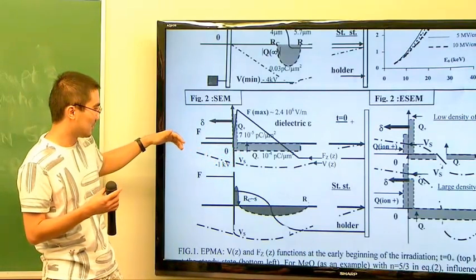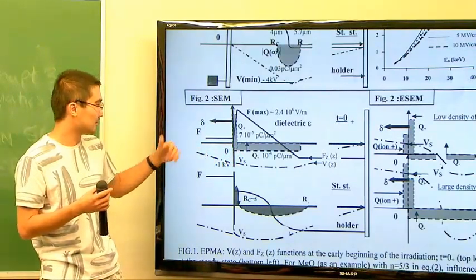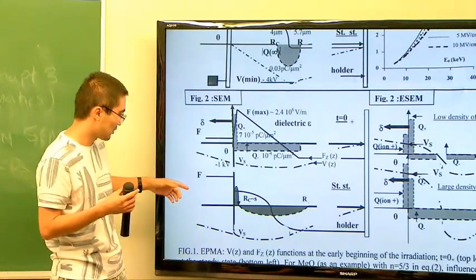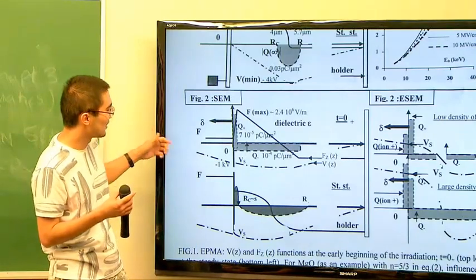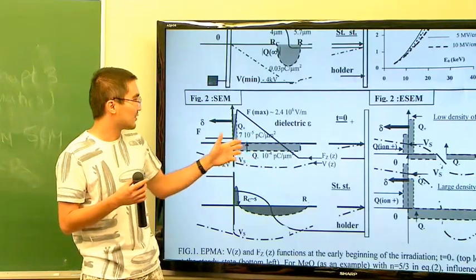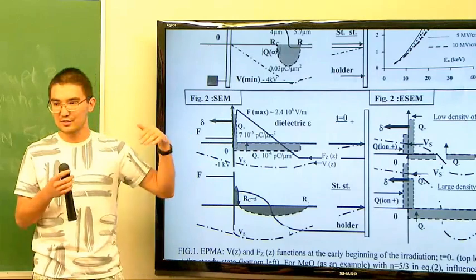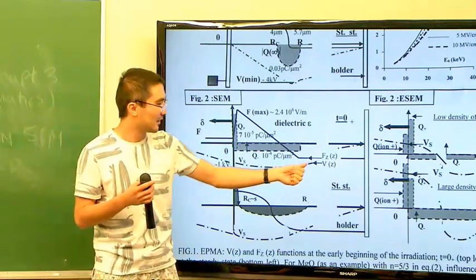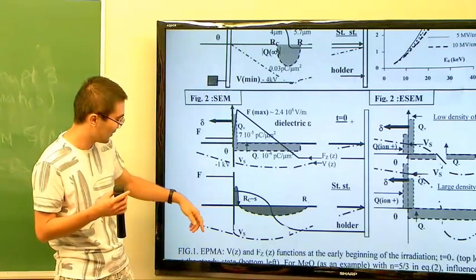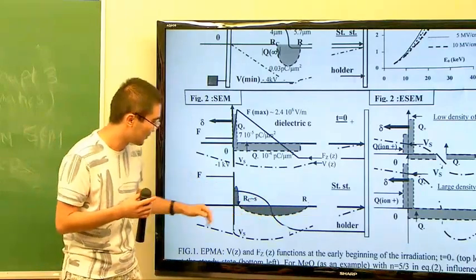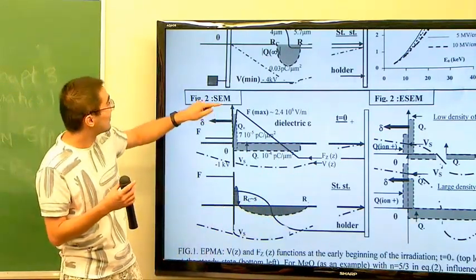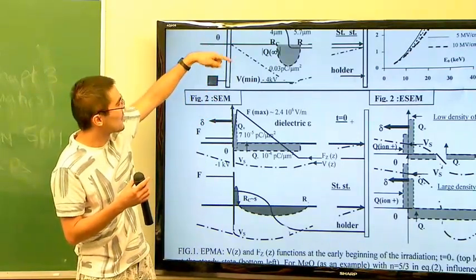Because of that positive charge, it slows down the electrons and you cannot image well at that point. As time passes, positive charges start to build up at the surface and after some point you kind of achieve steady state — the electric field can no longer increase. It basically stabilizes, and you have positive charges on the surface and negative charges deep into the bulk of the sample.